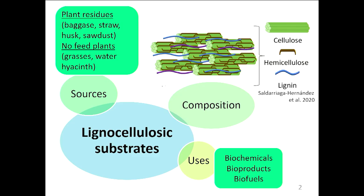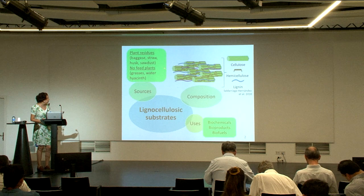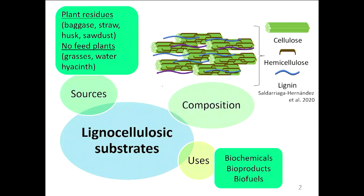First of all, I would like to start talking to you about lignocellulosic substrates. Basically, all plants are composed of lignocellulose, but when we are talking about second-generation biorefineries, we specifically refer to plant residues and non-feed plants. These vegetable materials with no added value can be transformed into biochemicals, bioproducts, and biofuels by converting the polymers that compose the plant cell wall. These polymers are called cellulose, hemicellulose, and lignin.